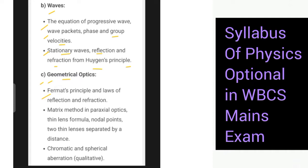Fermat's principle and laws of reflection and refraction. Then matrix method in paraxial optics, thin lens formula, nodal points, two thin lenses separated by distance. Then you have chromatic and spherical aberration.